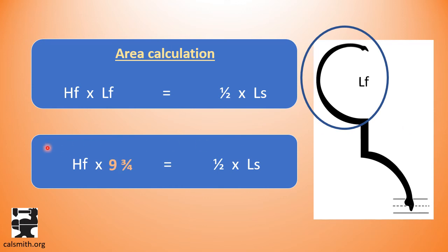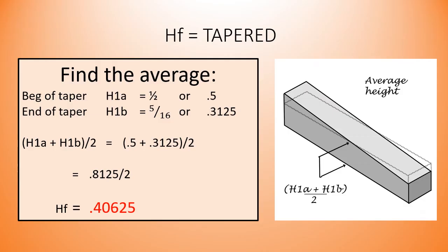That leaves the forged height of the bar. Since the bar is a taper, we can take an average of the starting and ending height of the taper and plug that into our calculation as our forged height. An average is calculated by adding together all the measurements or variables and dividing by the number of variables. In this case, we have half an inch at the beginning of the taper and five sixteenths at the end of the taper. We are going to add those together, divide by two, and we get 0.4065.